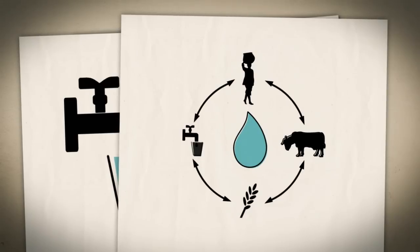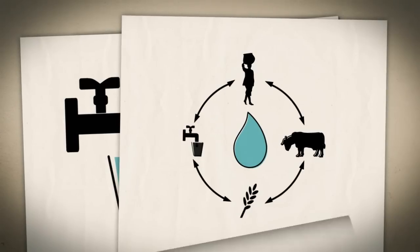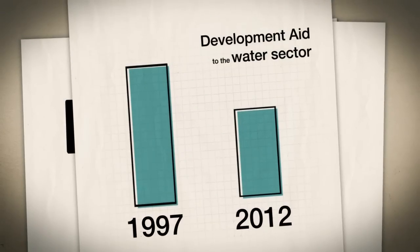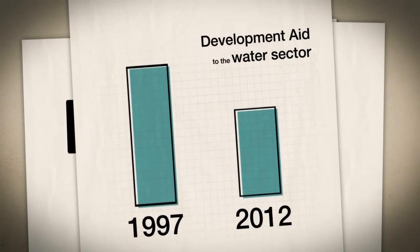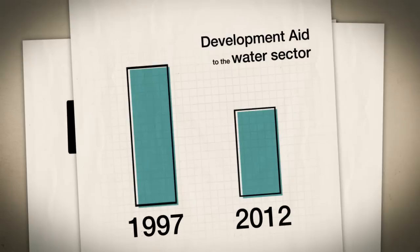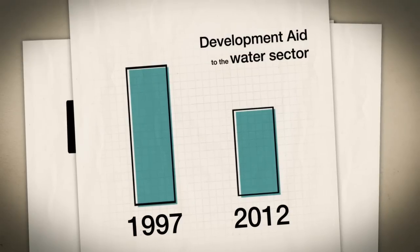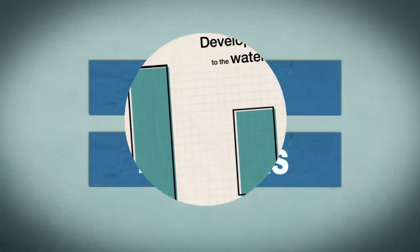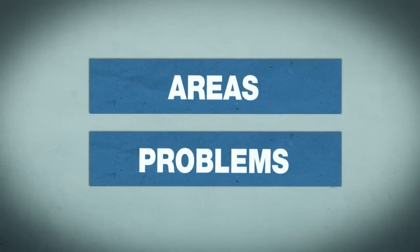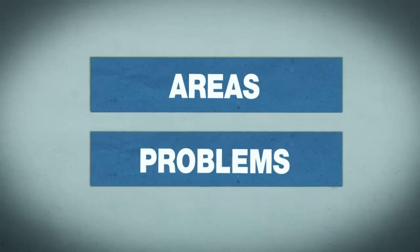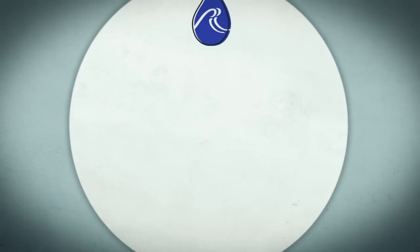Since 1997, the annual share of the global financial development aid spent for the water sector has fallen from 8 to 5 percent. Especially in developing countries, water plays an important role in many different areas.